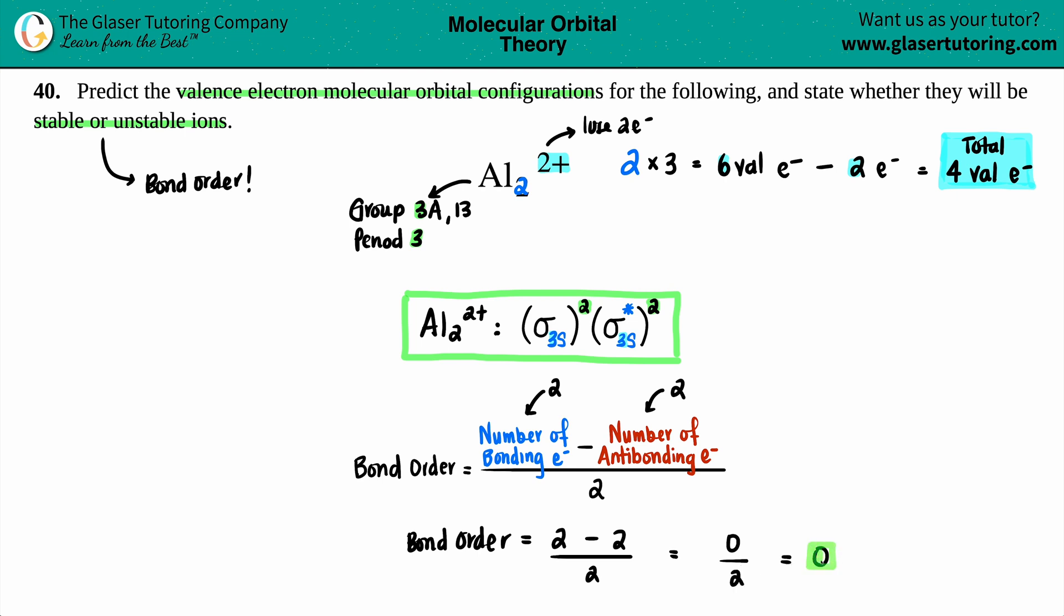And what did we just say? If you have a zero as your bond order, that means no bond. Absolutely no bond. So no bond is going to be formed between the two aluminums. So if no bond is going to be formed, is it going to be stable? Nah. This is an unstable ion. So whenever you get a zero as your answer, that's always an unstable ion. And you're done.